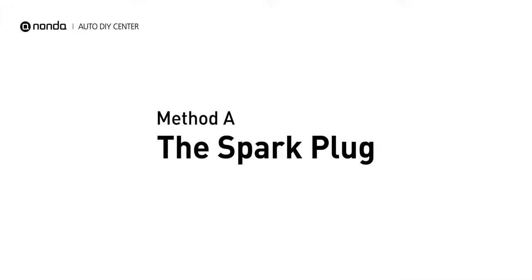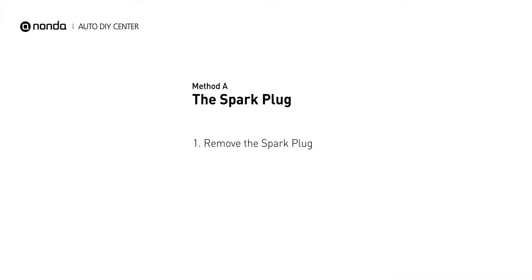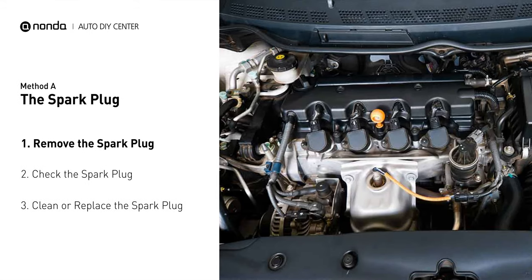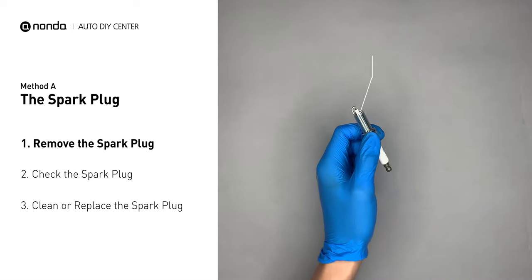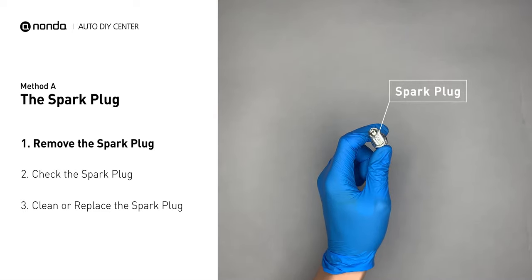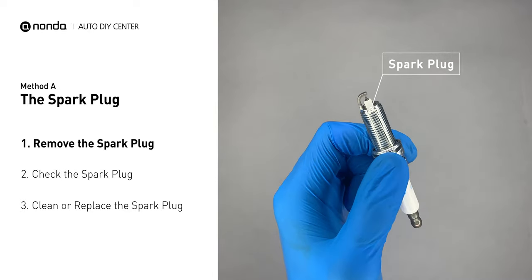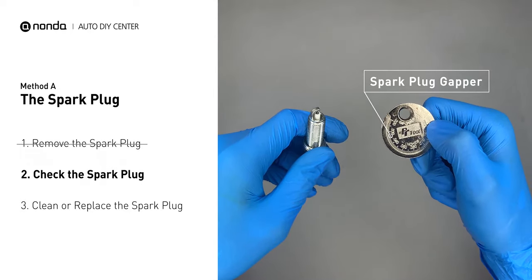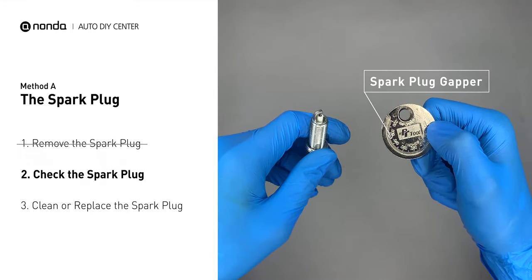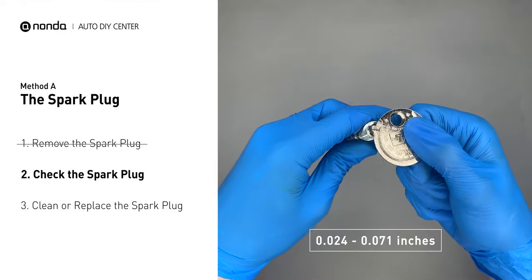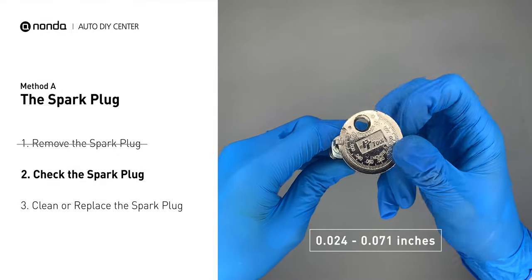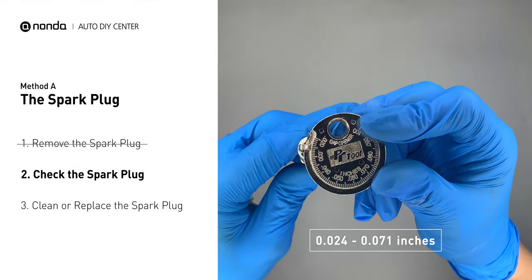Method A: the spark plug. The spark plugs are located at the engine end of the wires, under the plug covers that attach them. First, carefully remove the spark plug. Use the spark plug gapper to check the spacing of the spark plug. Normally the spacing should be between 0.024 to 0.071 inches.